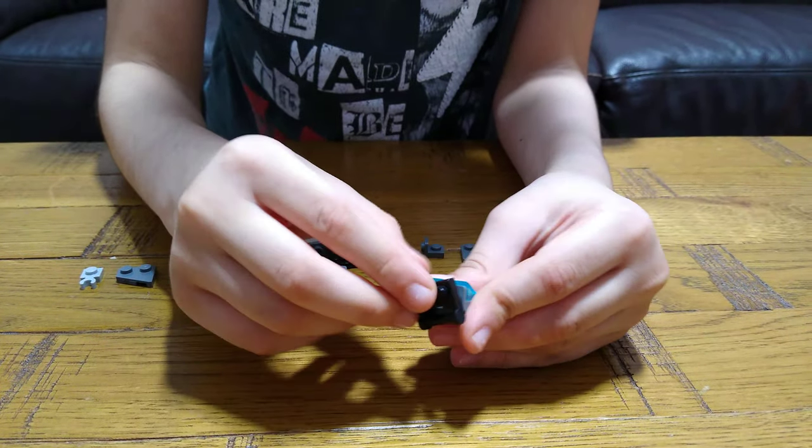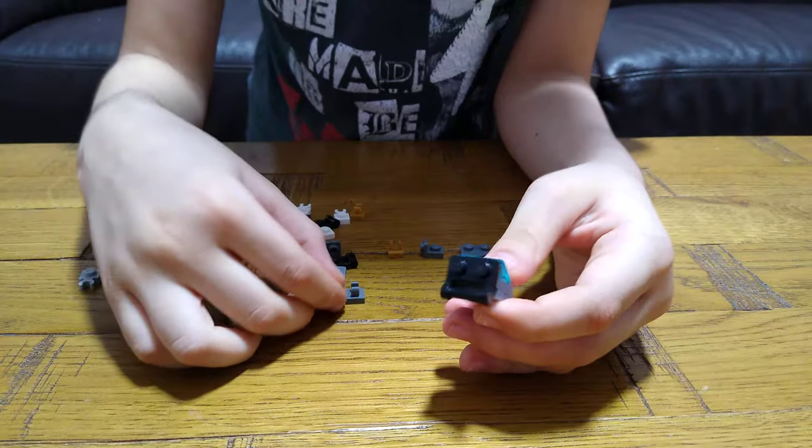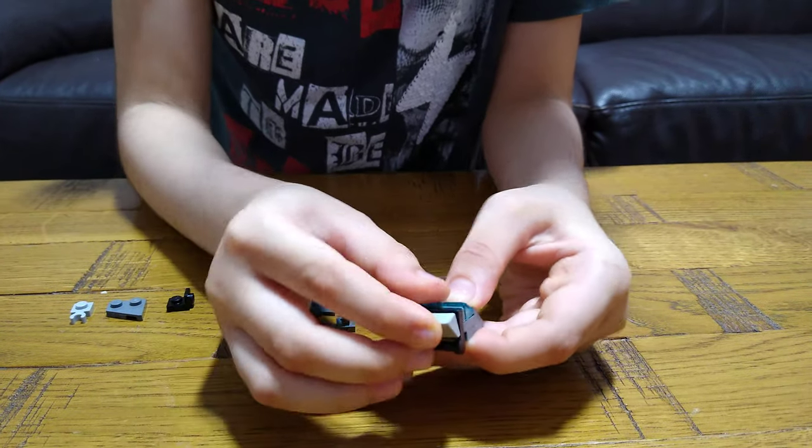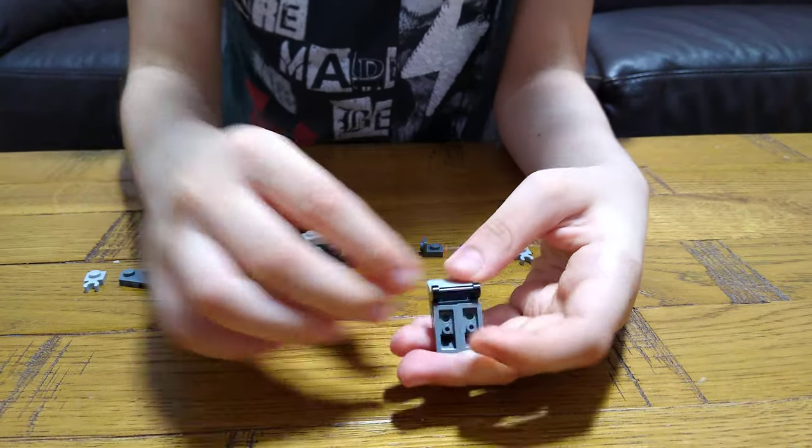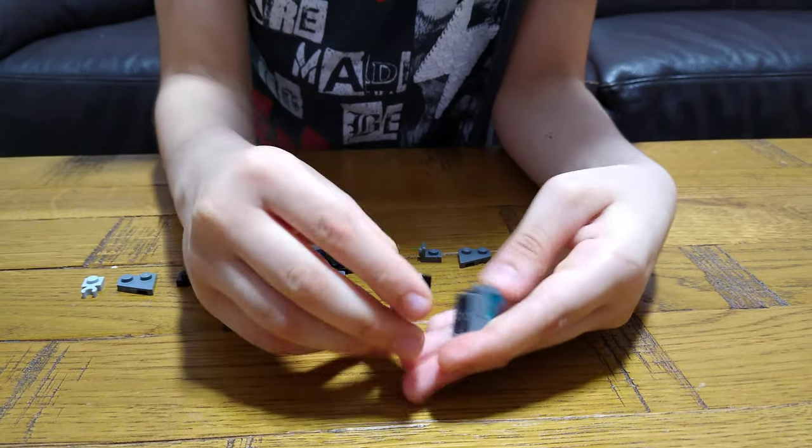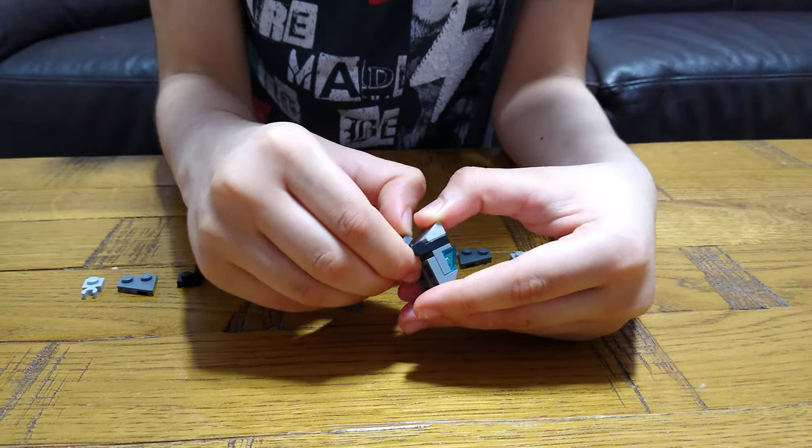And then you get one of these connecting pieces, put it there, and then put these 2x2 studs, the tight slopes, and then these pieces like to connect the head with the body.